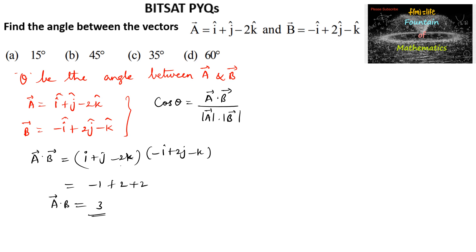Let us find mod a is equal to under root of 1 square plus 1 square plus minus 2 whole square, which is equal to root of 1 plus 1 plus 4 that is root 6. And again mod b is equal to under root of minus 1 whole square plus 2 square plus minus 1 whole square which is equal to root of 1 plus 4 plus 1 which is again root 6.